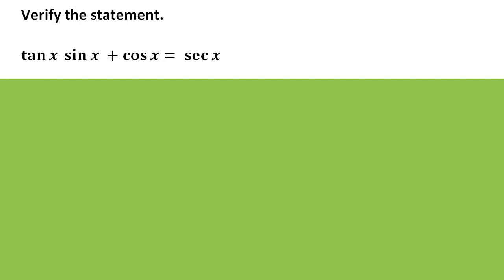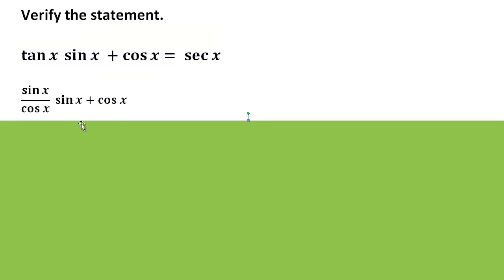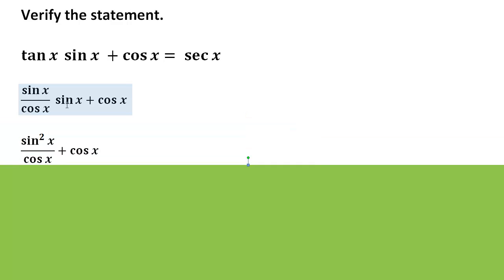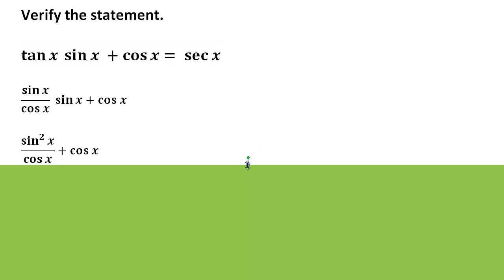Let's verify the following statement: tangent of x times sine of x plus cosine of x equals secant of x. The left-hand side looks more complicated, so let's rewrite everything in terms of sine and cosine — often a powerful approach. Tangent becomes sine over cosine, giving sin²x/cos x + cos x. Since we see a squared term, consider using the Pythagorean identity to introduce a cos²x in the numerator, so that sin²x + cos²x = 1 and we'd get 1/cos x, which is secant x.